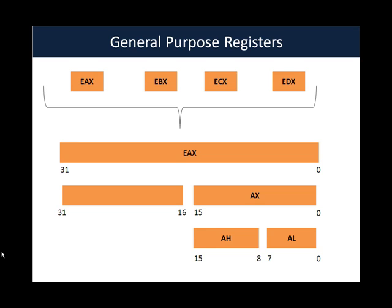There is one important thing you need to know about a few of the general purpose registers: namely EAX, EBX, ECX, and EDX. Any register in the IA-32 architecture is 32 bits. It is possible to access the first 16 bits of EAX by referencing it as AX. It is further possible to access the lower 8 bits and the upper 8 bits of that 16-bit portion by referencing them as AL (A low) and AH (A high).